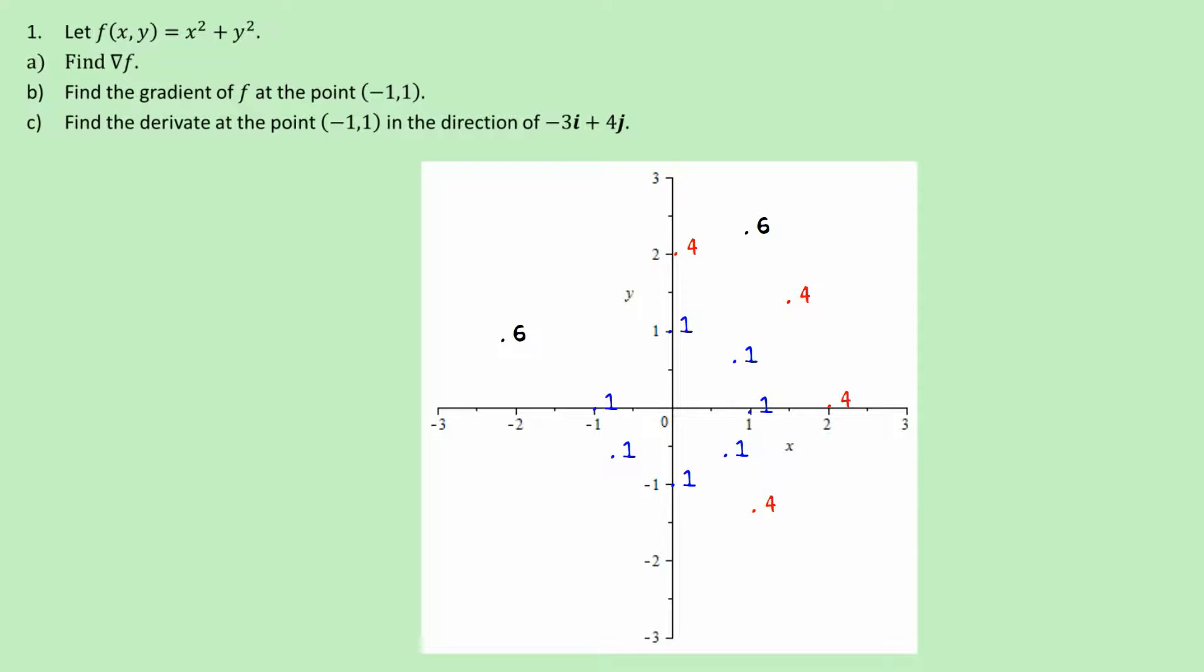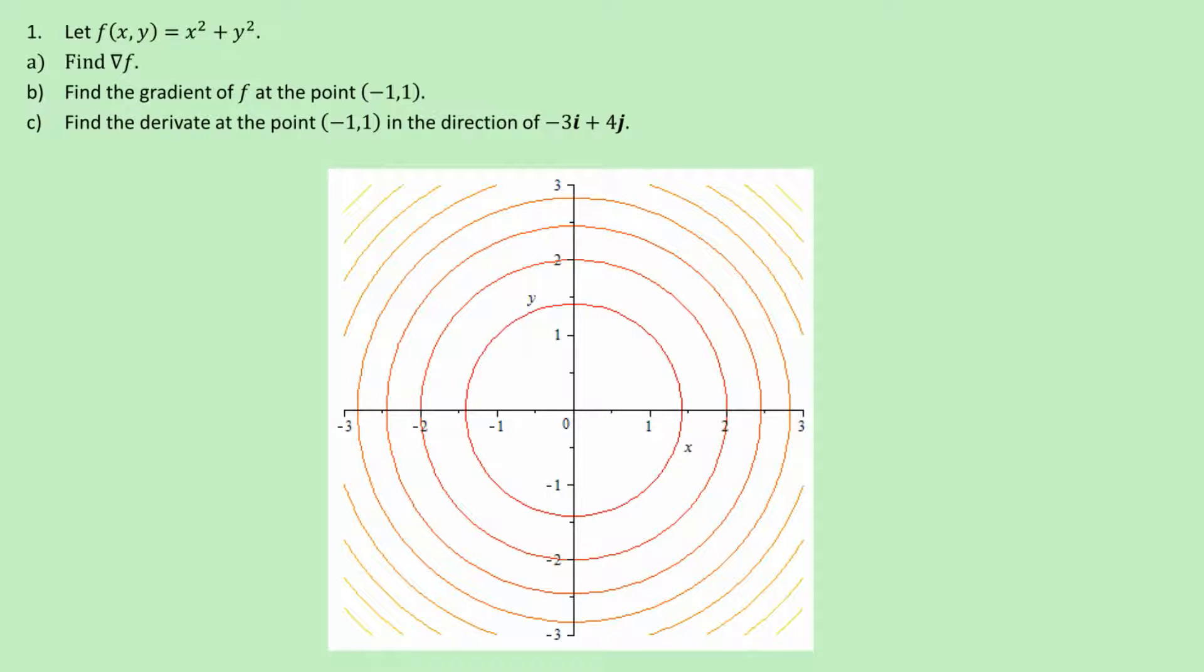What we can then do is join up all the places where all the values are the same with a line. So we can see here this innermost circle would be all the places where f(x,y) equals two, and the next one is all the places where f(x,y) equals four, etc. This is a contour diagram of f(x,y).